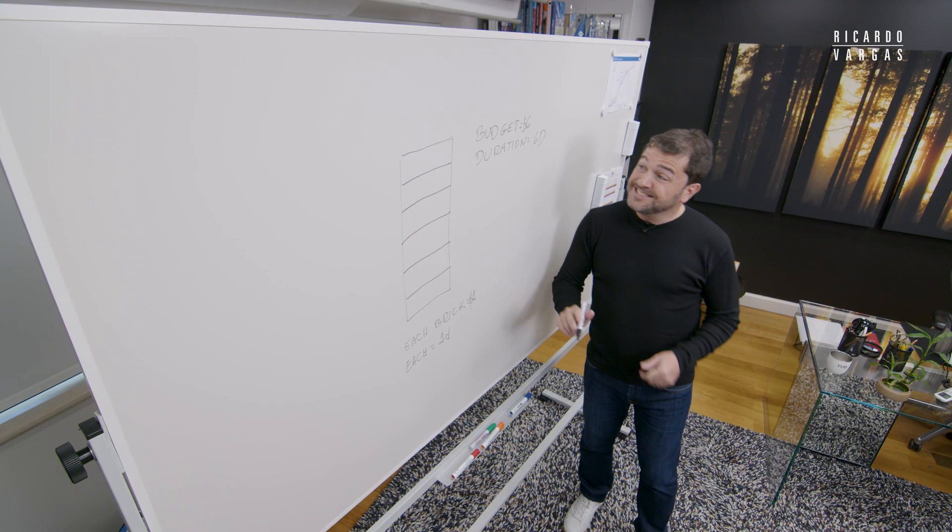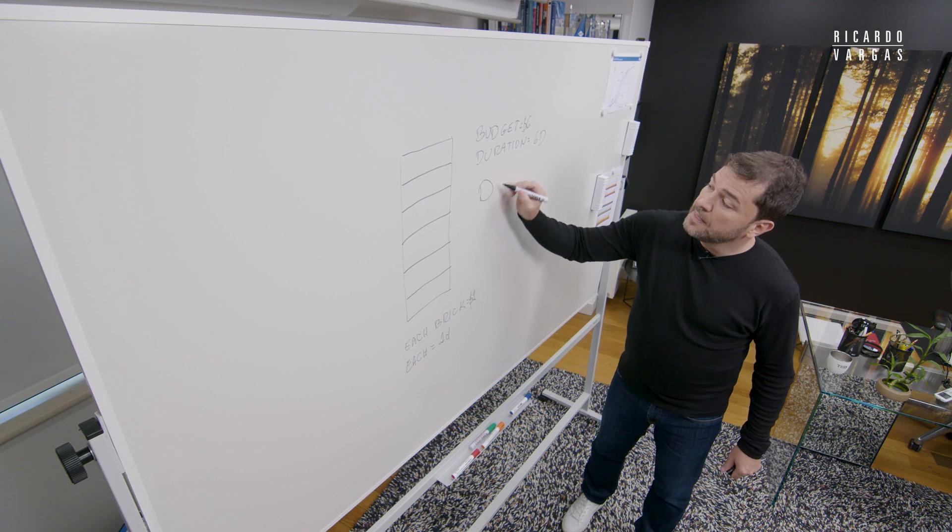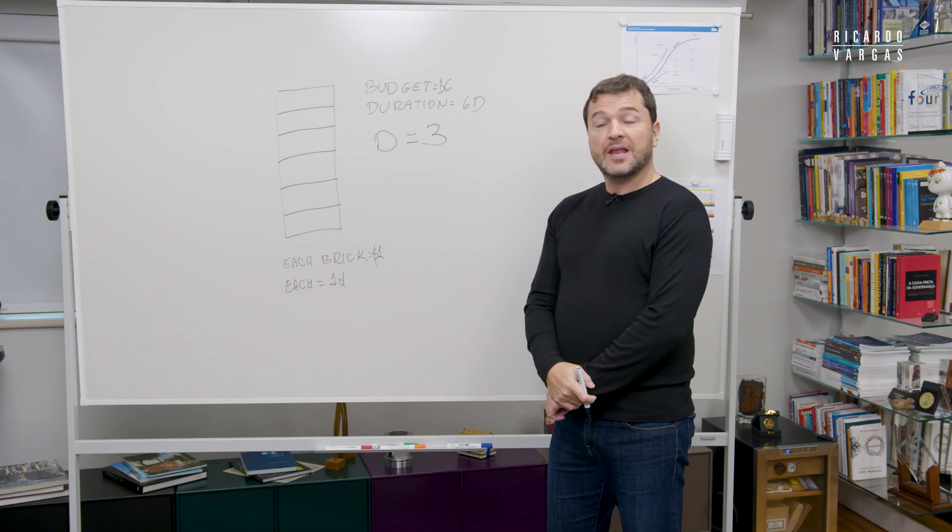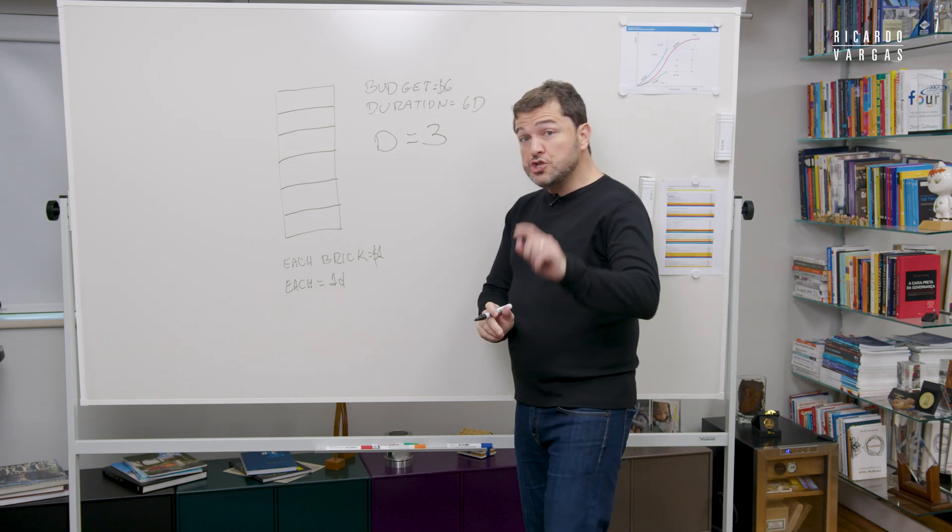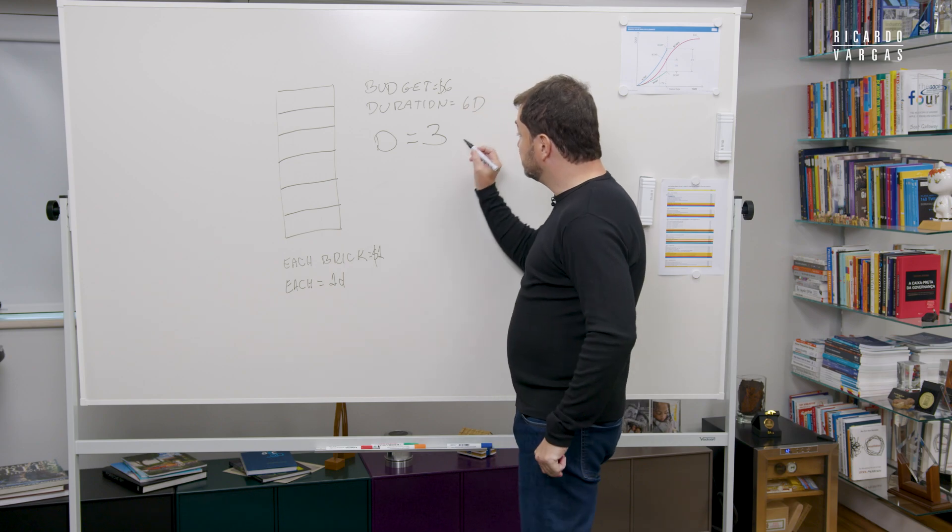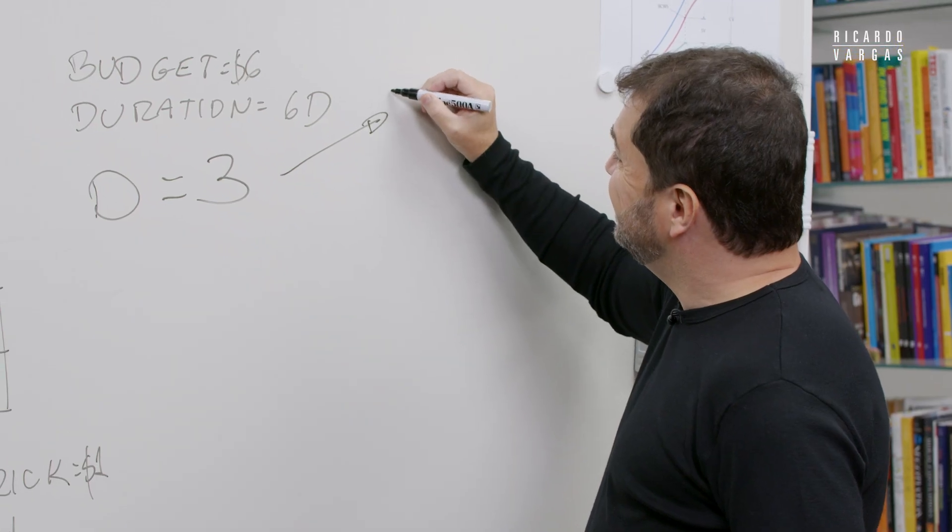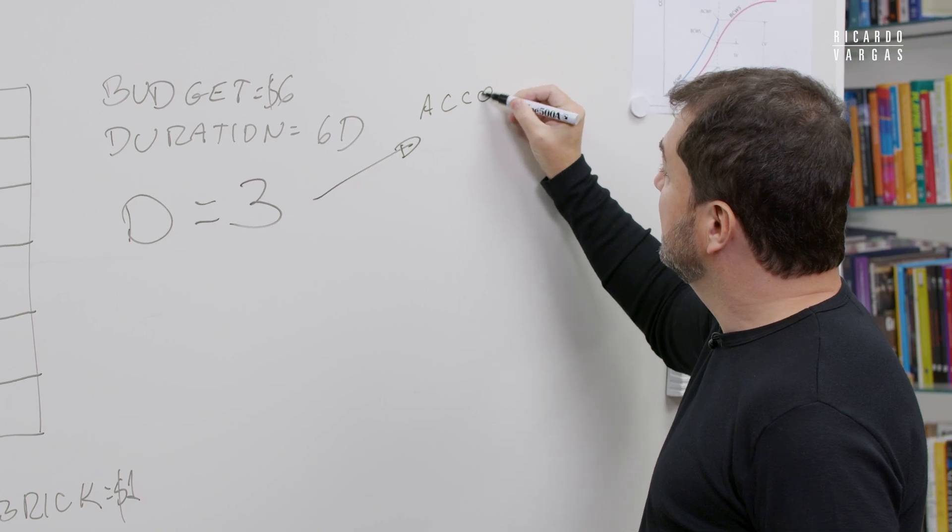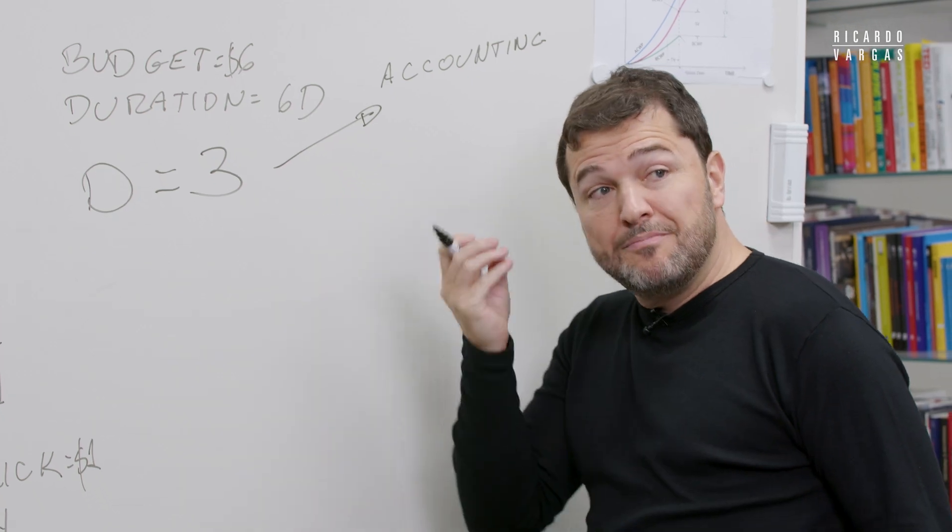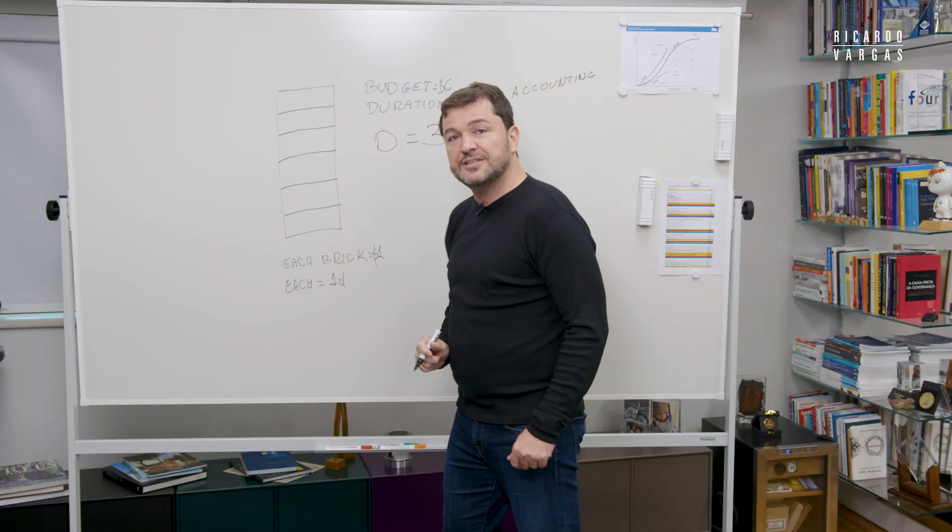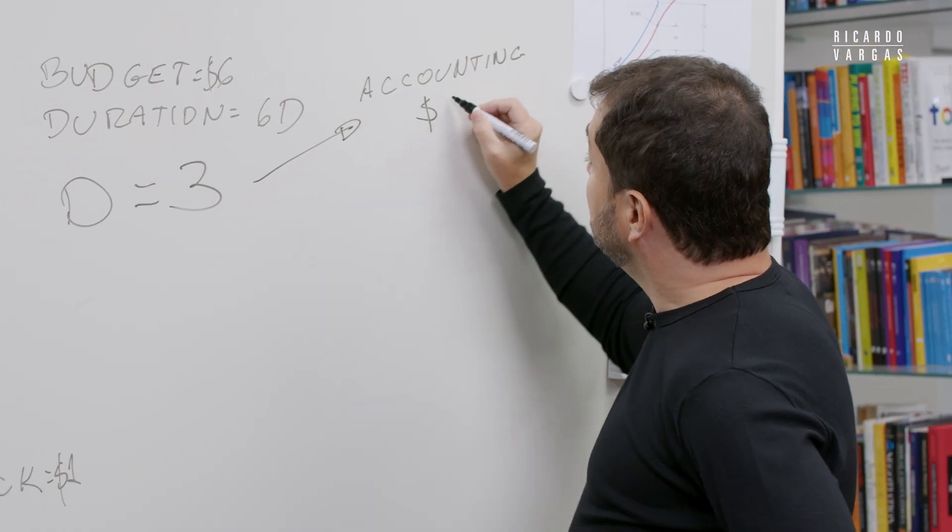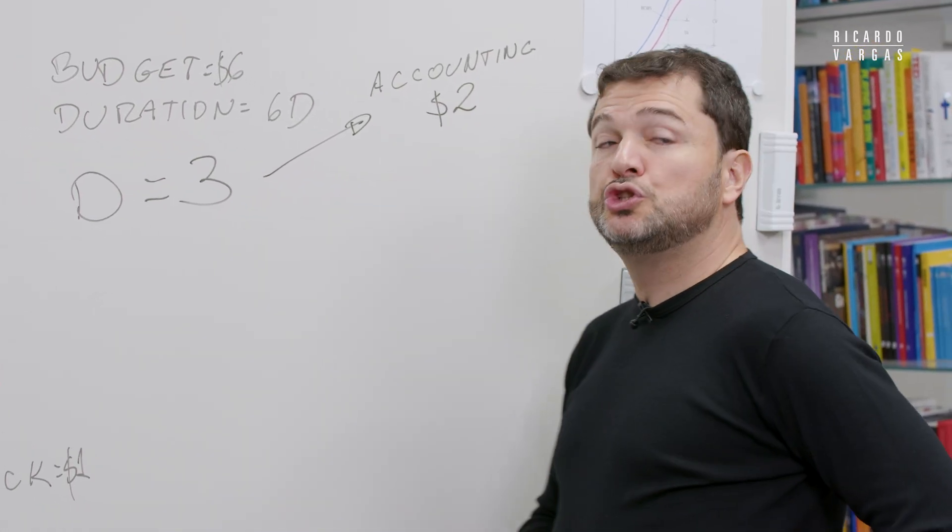Let's suppose you are on day three. And then you need to go in two places to understand the concept of earned value. First, you go to your accounting area and you check how much money this project spent. Let's suppose that it comes that you spent $2.